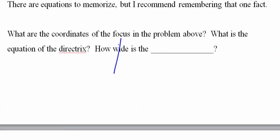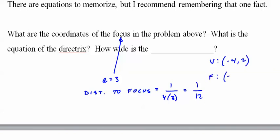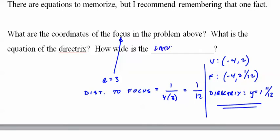So for the focus above, we had an a value of 3. So the distance to the focus is 1 over 4 times 3 is 1 twelfth. So if our vertex was at negative 4, 2, the focus is up a little bit at negative 4, 2 and 1 twelfth. The directrix is down a little bit at y equals 1 and 11 twelfths. The numbers are so small that it looks silly. So we're going to give you an example where it's much bigger. And the latus rectum is just 1 over a, which is 1 third. Again, a really small number, almost impossible to see when you're graphing.